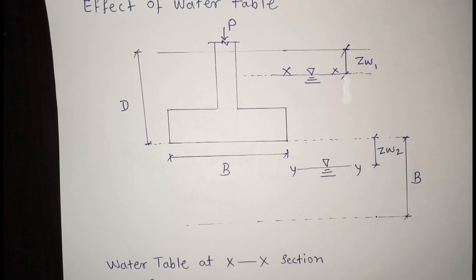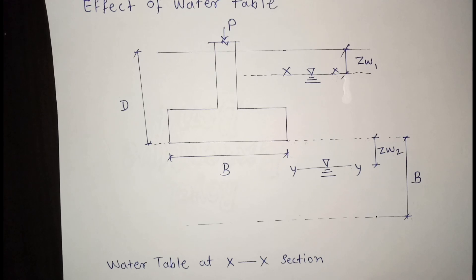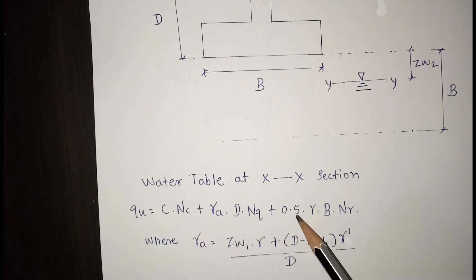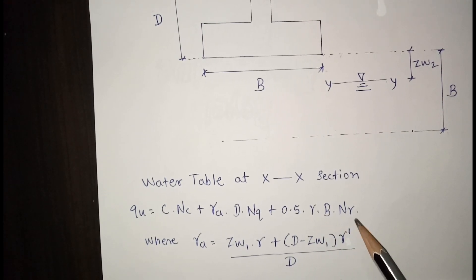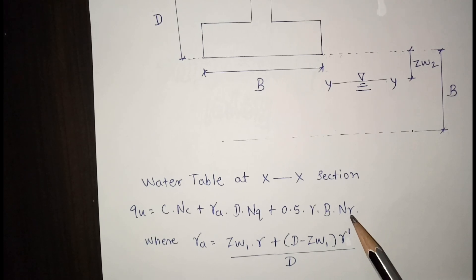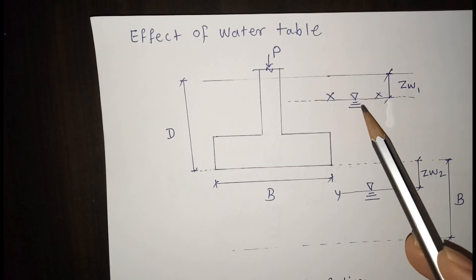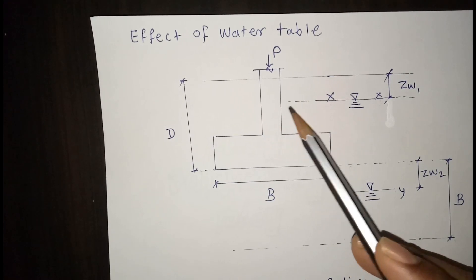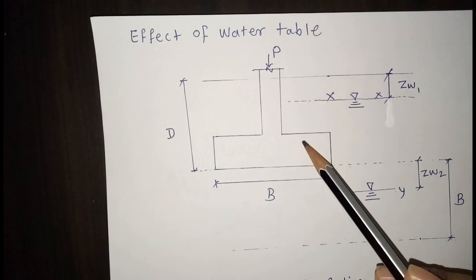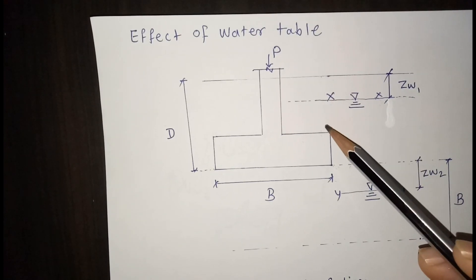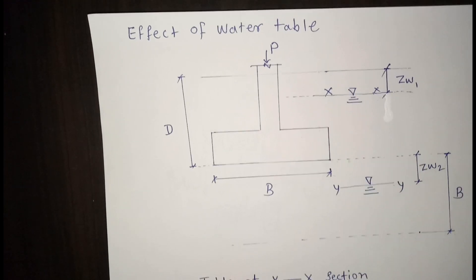First we consider the XX section — water table at XX. For the continuous footing formula QU = CNC + γD·NQ + 0.5γB·Nγ, when the water table is at XX, it affects the second term, which represents overburden pressure. Above the water table we use dry unit weight γ_dry, and below the water table we use submerged unit weight γ'. We therefore take the average unit weight for the second term.